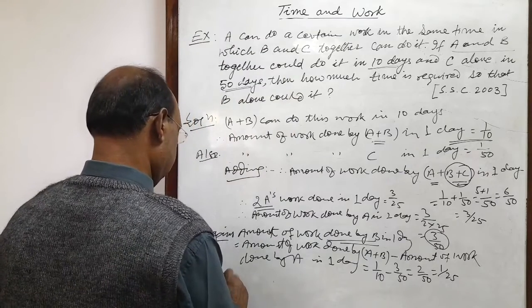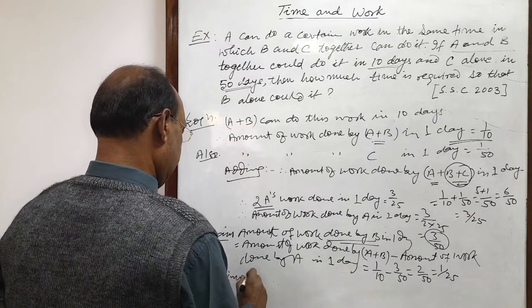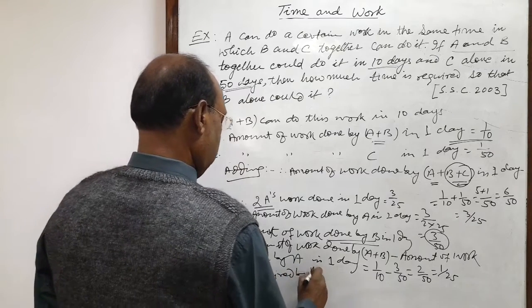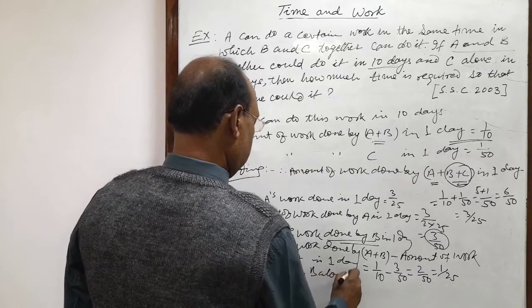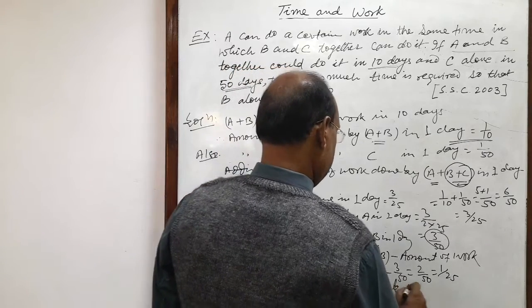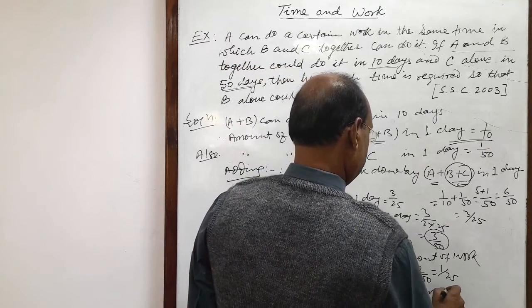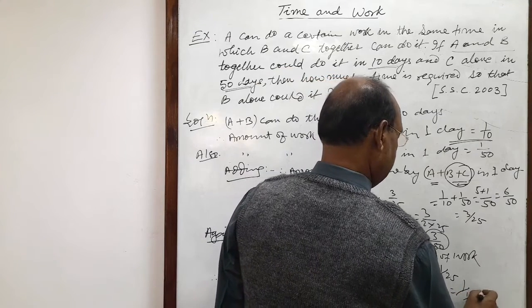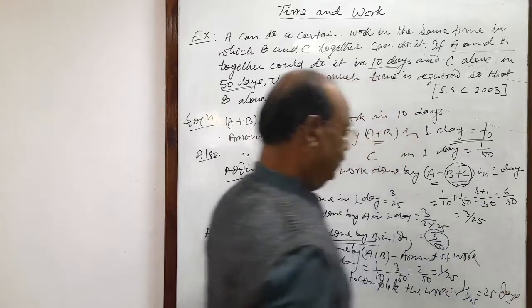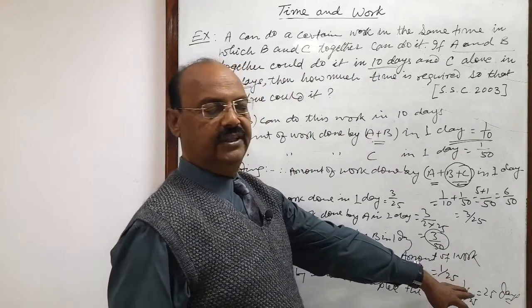Therefore, time required by B alone to complete the job or complete the work: 1 upon 1 by 25 is equal to 25 days. So this is the answer, 25 days.